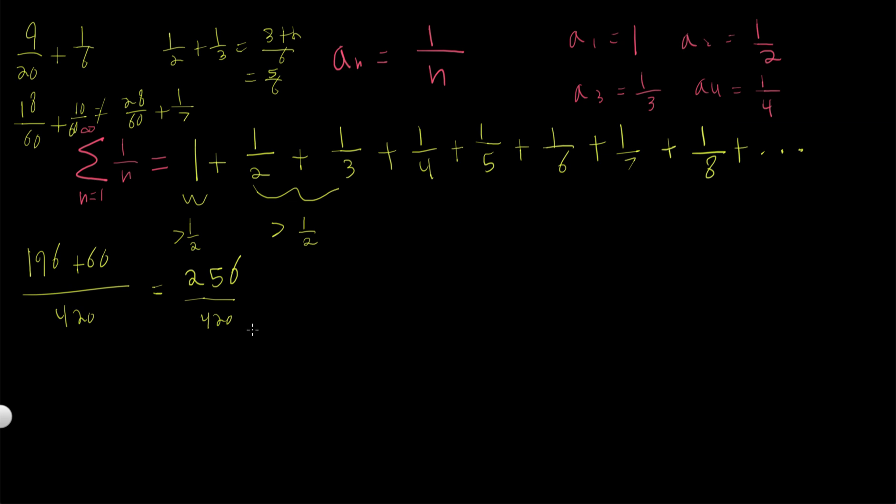Over 420. Now, hold on, did we do that right? 7 times 28 is 196 plus 60. That's 256 over 420. Yeah, that seems about right.